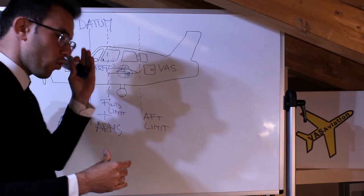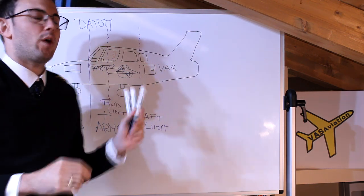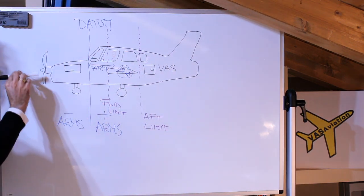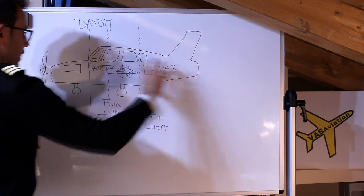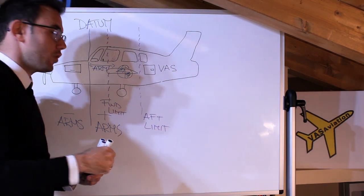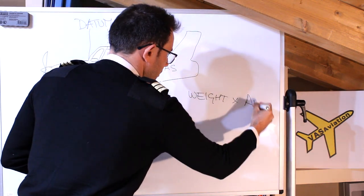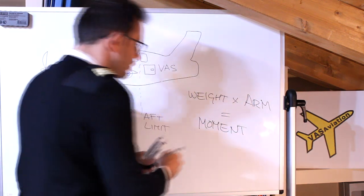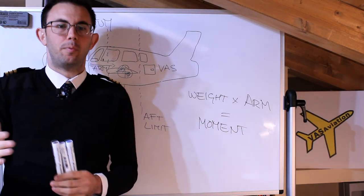The last thing we need to know, memorize, and understand is a basic formula to find out what our CG is and where it is located along the longitudinal axis of the aircraft — the axis that goes from the nose to the tail. The CG can move back and forth along this axis. The formula is: weight times the arm equals the moment.